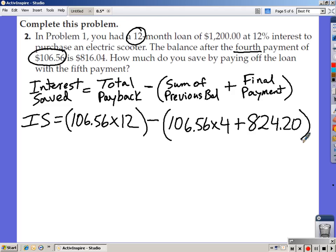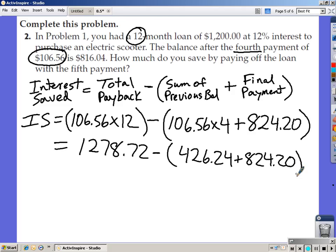Now, I have my problem set up. My interest saved equals my total payback minus the sum of my previous balances plus the final payment. So, let's work this out. 106.56 times 12 is 1,278.72 minus 106.56 times 4 is 426.24 plus 824.20. Combine those two at the end, you should get 1,250.44.